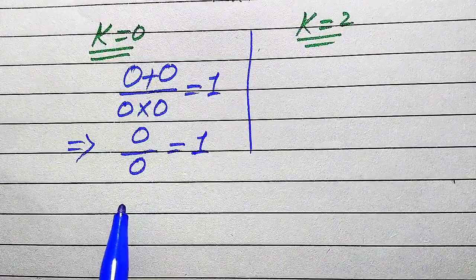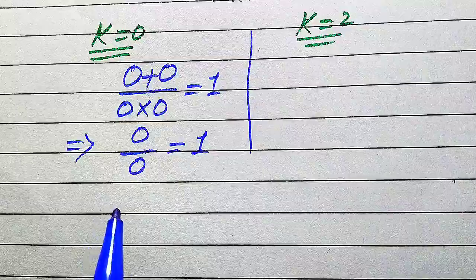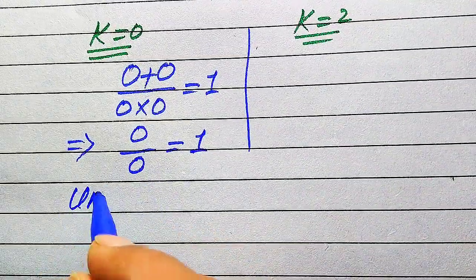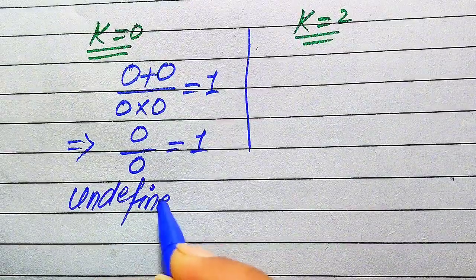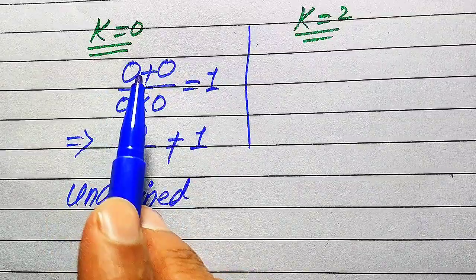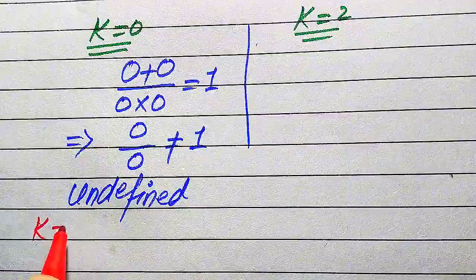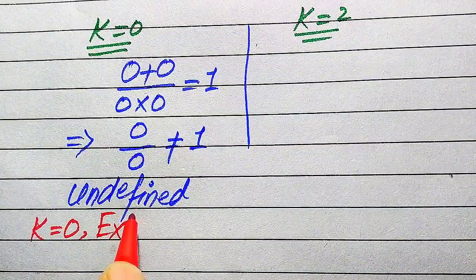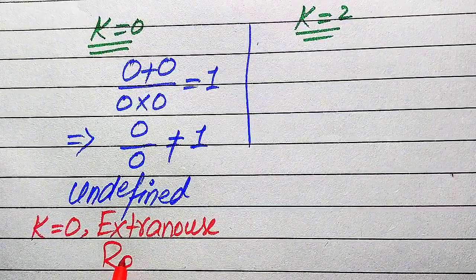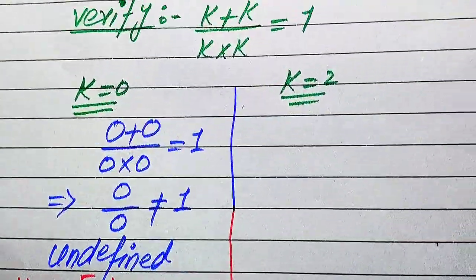This simplifies to 0 divided by 0 equals 1. Now, 0 divided by 0 is called the indeterminate form — in other words it is undefined. If the left hand side is undefined, both sides are not equal. Since both sides are not equal, the value k equals 0 does not satisfy the given equation, so we call k equals 0 an extraneous root of the given equation.